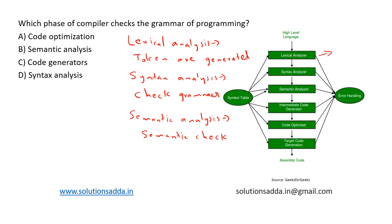Once this is done, we move on to intermediate code generation. In intermediate code generation, this phase generates the intermediate representation of the source code that can be easily translated into machine code. So the fourth phase is intermediate code generation.